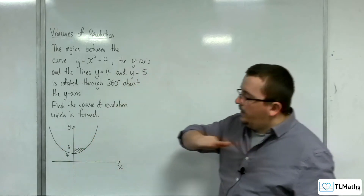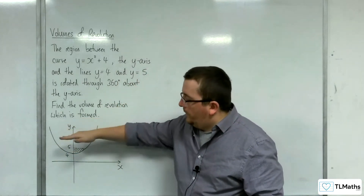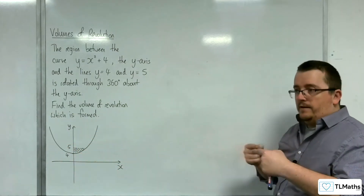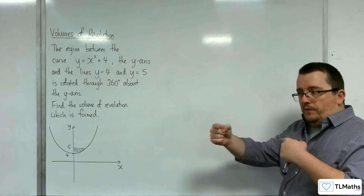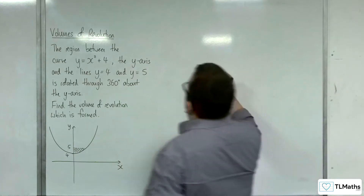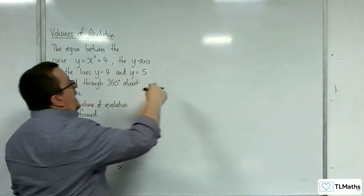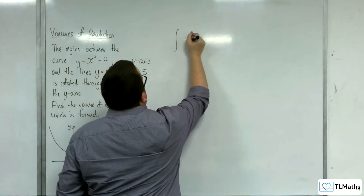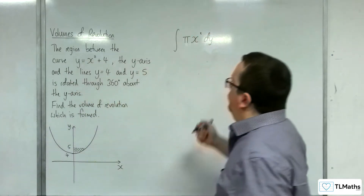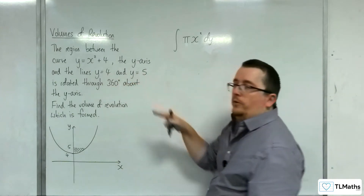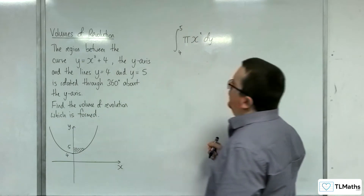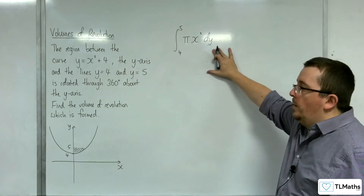Now if you take cuts along the y-axis — horizontal cuts — then each of your radii, the length of that, will be governed by the x value. So that means that the volume we're looking for is going to be the integral of pi x squared dy. And we know it's got to be dy on the end because we're integrating between y equals 4 and y equals 5. So this will get us the required volume.